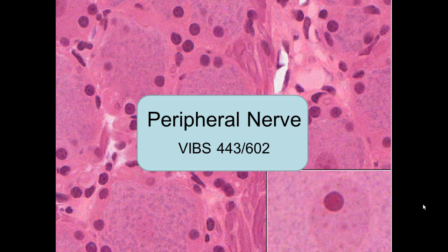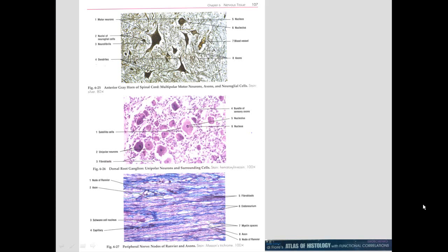Today we're going to talk about the peripheral nervous system. We will talk about the characteristics of neurons and support cells, and a little bit about the organization of the nervous system. Here we can see a nerve in the spinal column, some dorsal root ganglia, and the peripheral nerve.